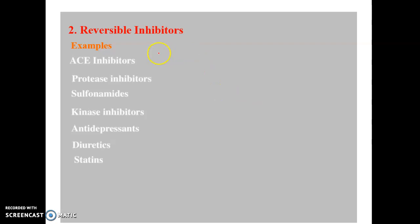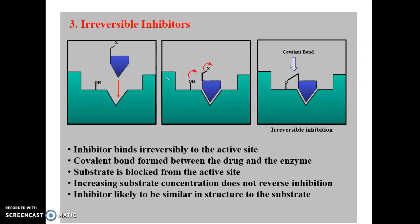This is the first mode of inhibition — reversible inhibition. Some examples of reversible inhibitors include protease inhibitors, sulfonamides, kinase inhibitors, some antidepressants, and diuretics.